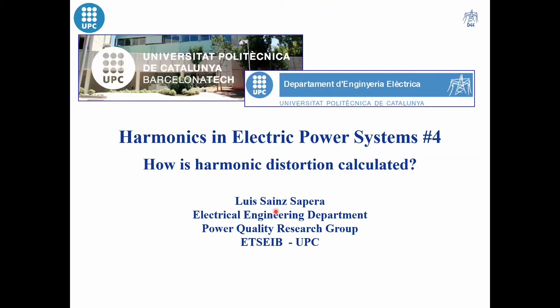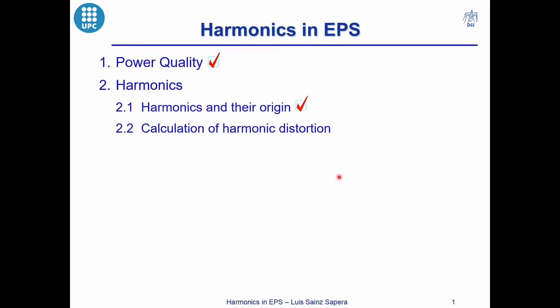Hello, I am Luis Sainz. In this fourth video I'm going to explain how harmonic distortion is calculated. In the first video I introduced power quality, the concept of harmonics, and the origin of harmonics. We studied that this origin comes from nonlinear loads that inject harmonic currents in networks, and when these harmonic currents go through the network impedance, harmonic voltages arise. In this situation I ask: how to determine if the currents and voltages are highly or low distorted, and what is the level of this distortion?